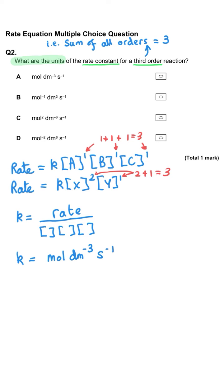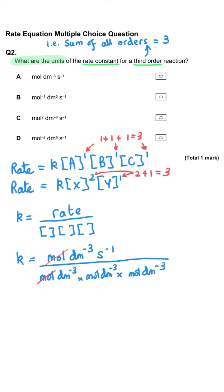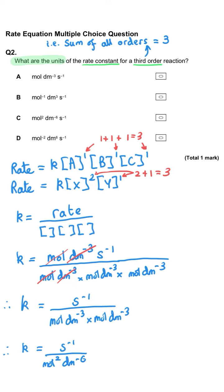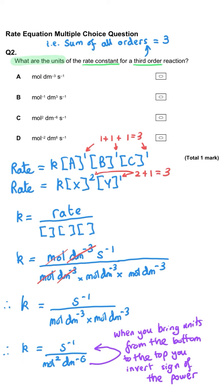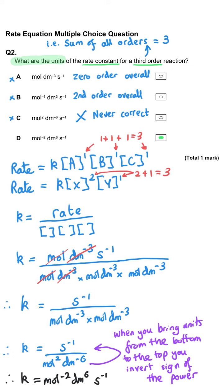The units of rate of reaction are always mol dm⁻³ s⁻¹ and concentration always mol dm⁻³. One mole cancels from top and bottom, and one dm⁻³ from top and bottom, leaving s⁻¹ divided by mol² dm⁻⁶. Bringing mol² to the top gives mol⁻², dm⁻⁶ becomes dm⁶, and s⁻¹ stays. So D is the correct units for any third order reaction.